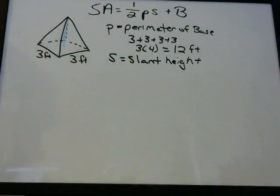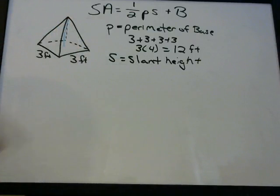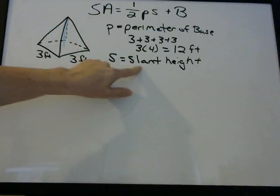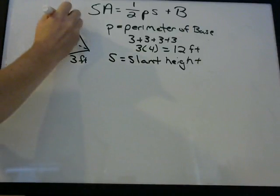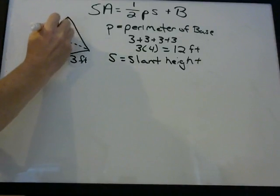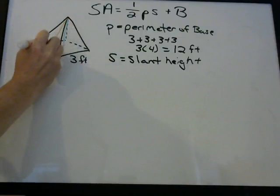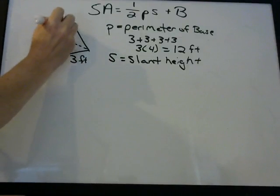That is the height of the pyramid — we don't want that. We want the slant height. The slant height goes from the top to the middle of a side.